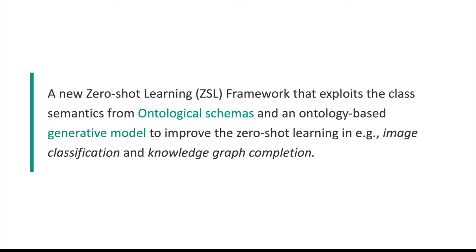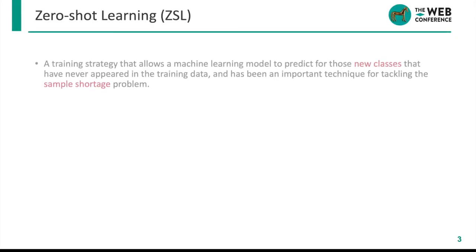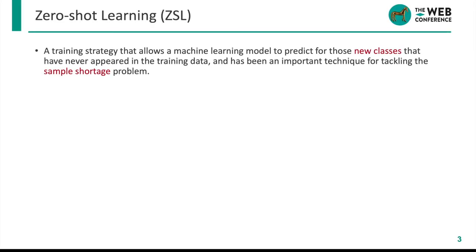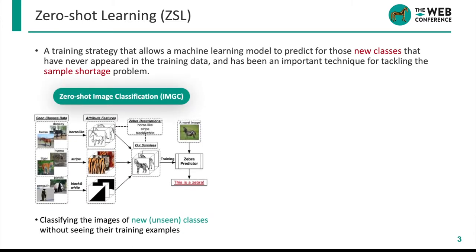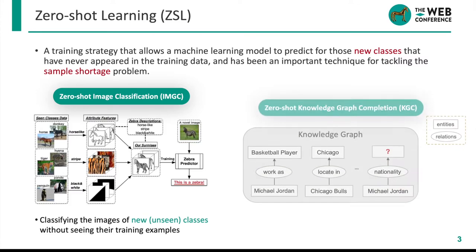Such as image classification and knowledge graph completion. We first begin by introducing what is zero-shot learning. ZSL is a training strategy that allows a machine learning model to predict for new classes that have never appeared in the training data. For example, in animal image classification, the model is trained on three classes — horse, tiger, and panda — but at the testing stage the model is used to classify images of the new class zebra.